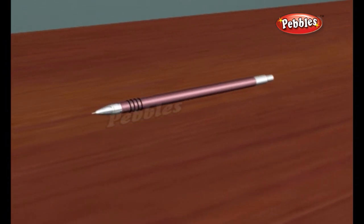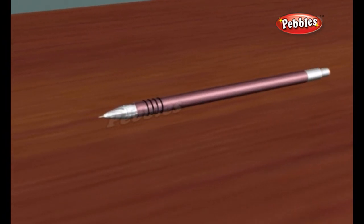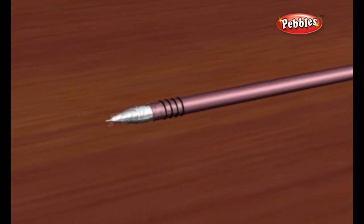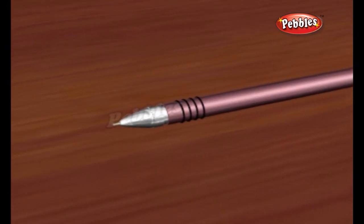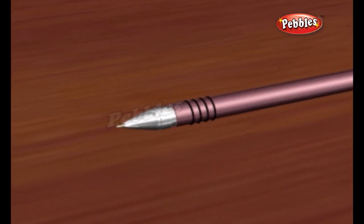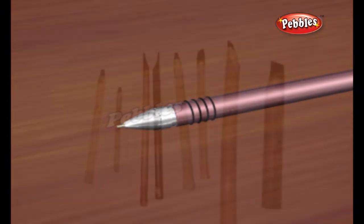Ballpoint. A pen is a tool used for writing or drawing with a colored fluid such as ink. A ballpoint pen is a pen that uses a small rotating ball made of brass, steel, or tungsten carbide to disperse ink as you write.